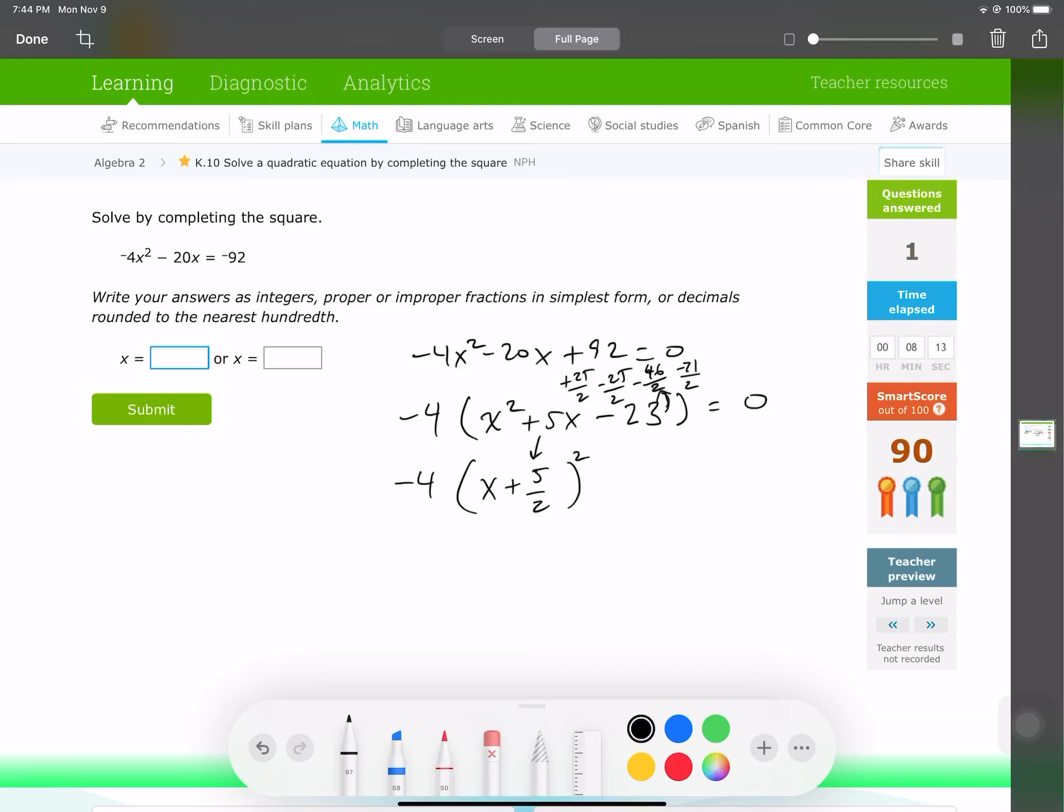Now, we have 71 over 2 here. Please be careful, this is all inside the parentheses, so we have to multiply the negative 4 to kick it out. We multiply it to kick it out, it will be a positive. 71 over 2 times 4, these are both negative, and the 4 and 2 divide out, leaving me a 2, and we're left with 142 equals 0. And then we're going to move stuff over, so it's negative 4 x plus 5 over 2 squared equals negative 142.